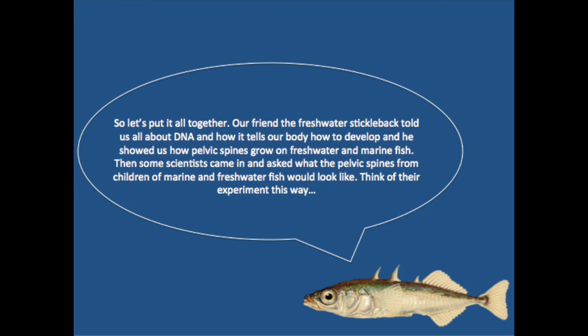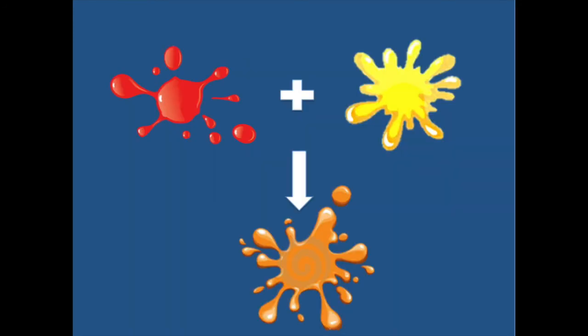Think of their experiment this way. Think about it as mixing colors. If you mix red and yellow, you get orange. Well, if you mix marine and freshwater, you get something in between just the same way. So if you took a marine fish with large pelvic structures and a freshwater fish with small pelvic structures, what do you think you'd get? You'd get a fish with medium pelvic structures.